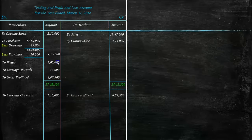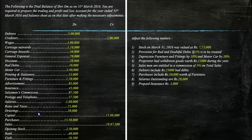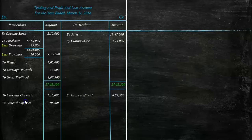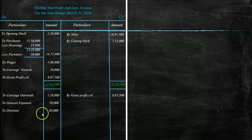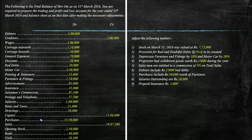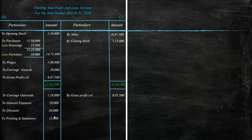Continuing indirect expenses on the debit side: 'To General Expenses Rs. 70,000', 'To Discount Rs. 20,000', 'To Printing and Stationery Rs. 15,000', and 'To Advertisement Rs. 85,000'. As the left side has no space left, we continue the debit side on the right side of the format.